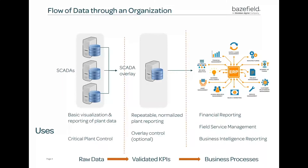This is a three-tiered example of how data flows in a typical renewables organization. On the left-hand side of this slide, you'll see individual SCADA systems. These typically represent each individual power plant that you may have — a wind site, a solar site, a combined site. For a SCADA overlay, the goal is to generally connect to all these individual protocols and individual SCADAs, take all that raw data, clean it, and present normalized data and clean KPIs.